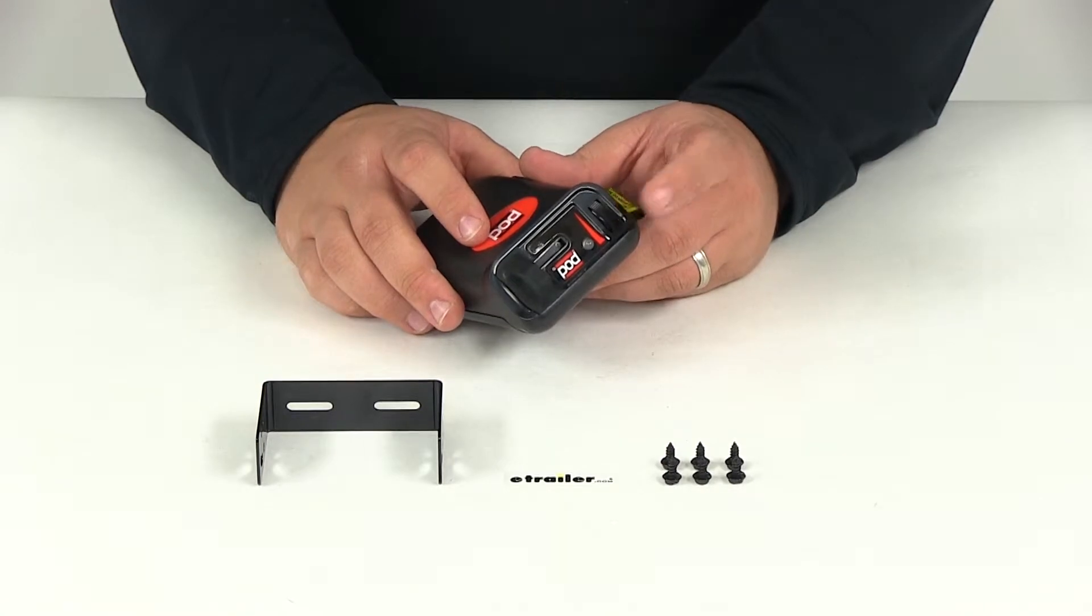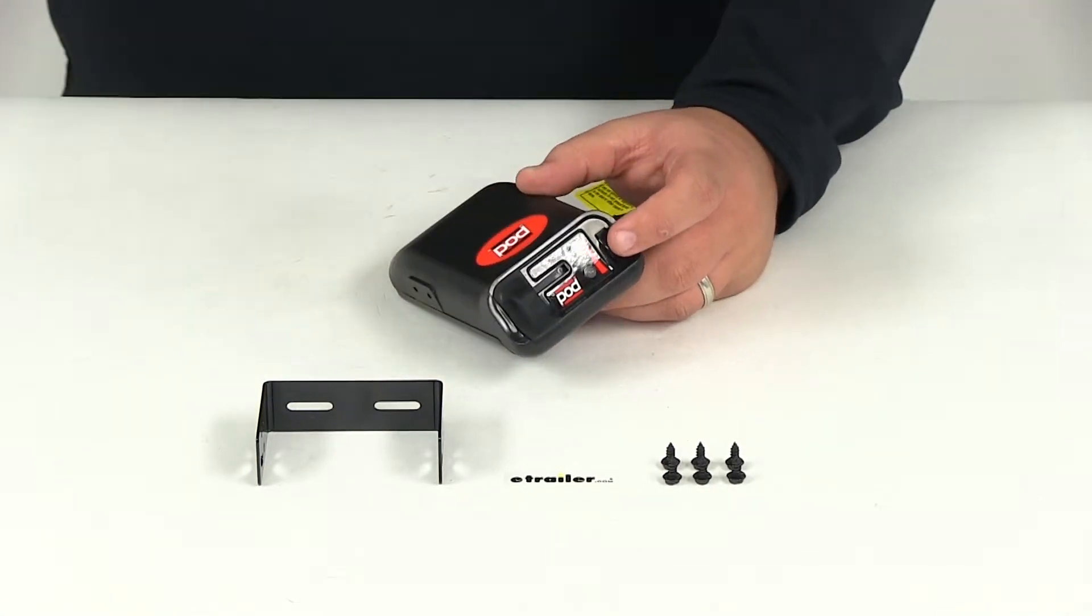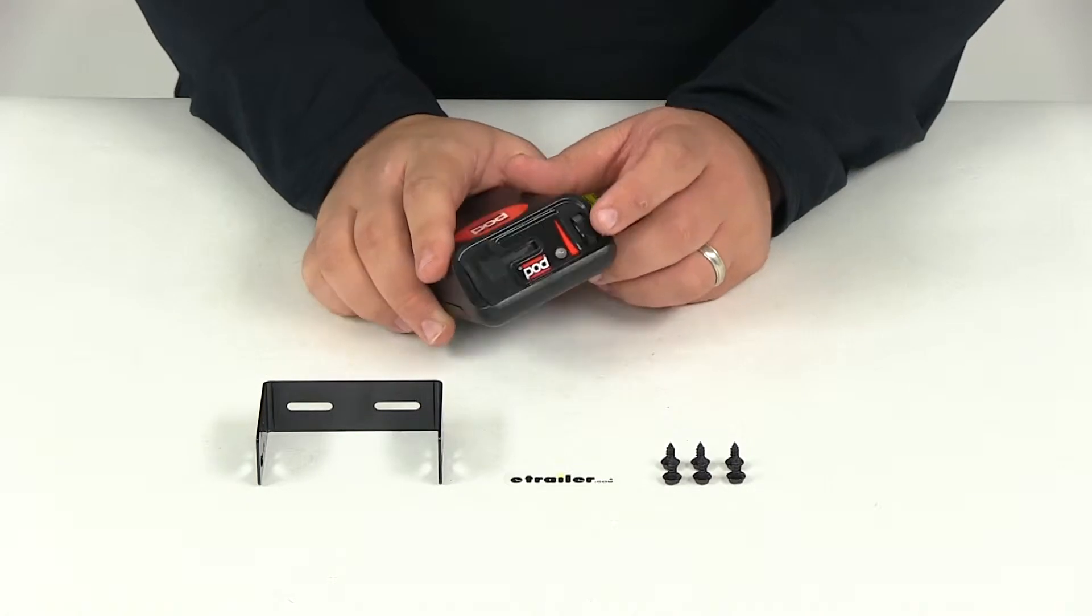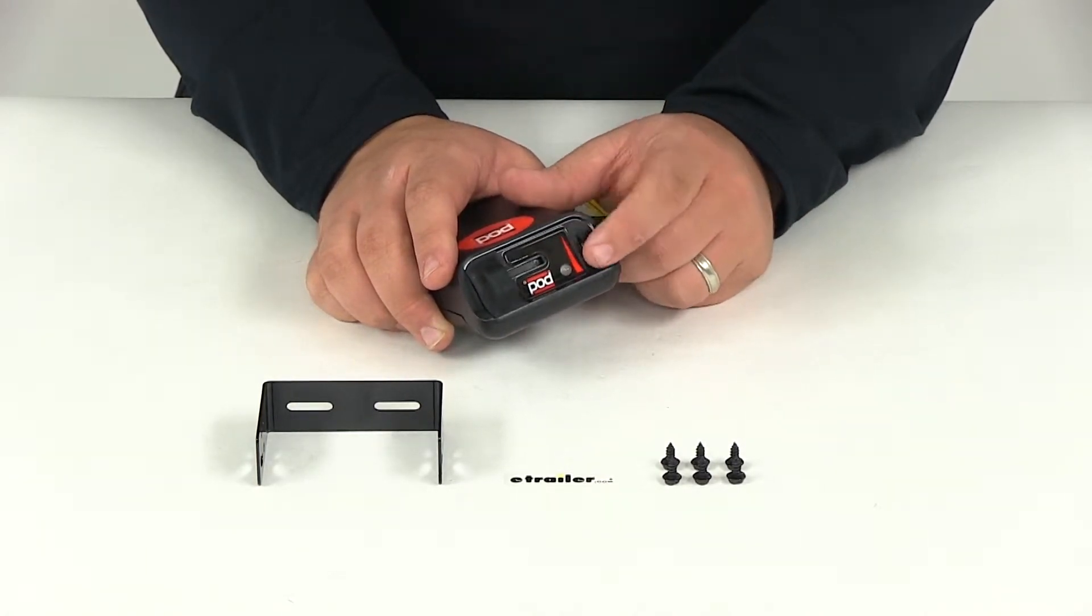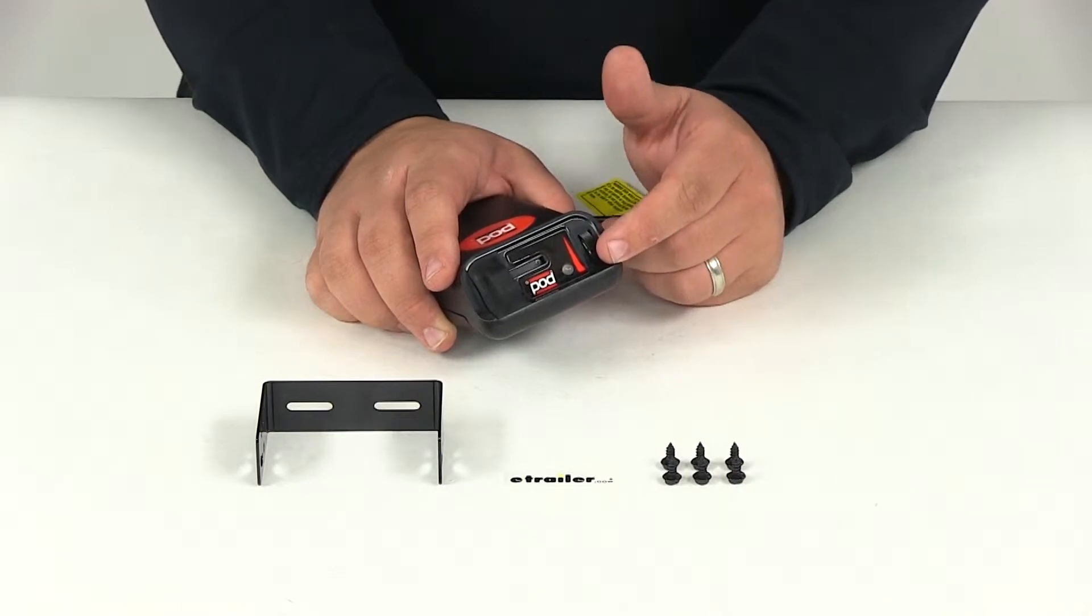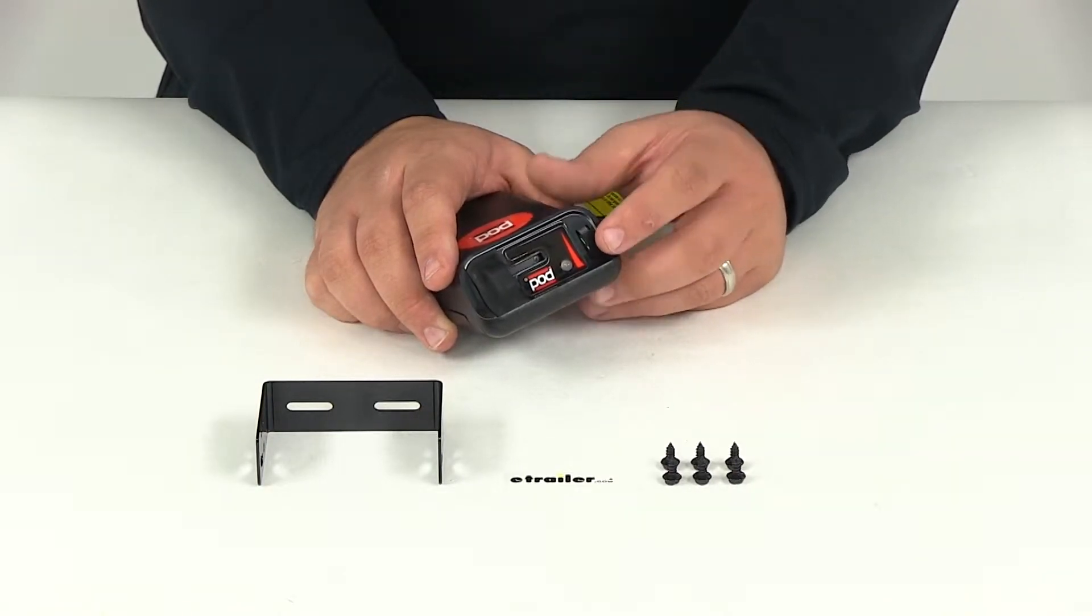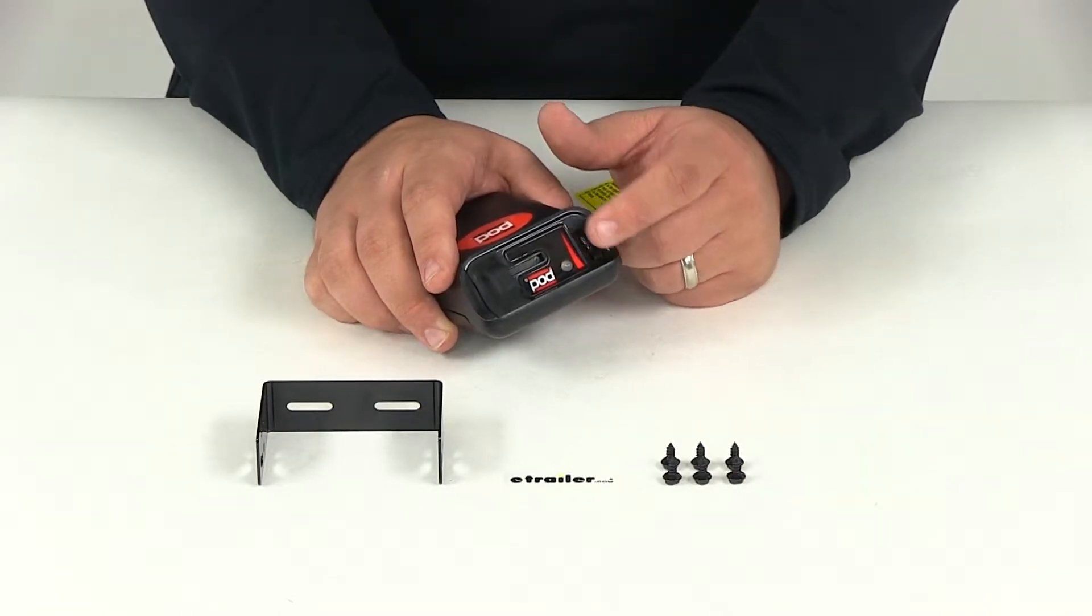It features the adjustable output control that lets you determine the amount of braking force. All you do is use that thumb wheel there to decrease or increase it. You'll want to set it to maximum when you travel through hilly terrain with your fully loaded trailer, and you can back off the power output when you tow a lightweight trailer.